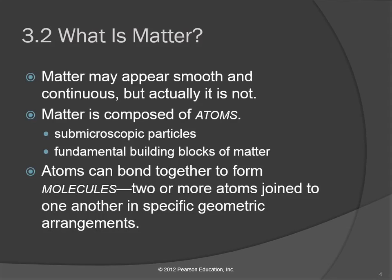Those atoms can join together and make molecules. A molecule is just two or more atoms that are joined together in a specific geometric arrangement. So if you think of people as being like atoms, then a family might be like a molecule — people that have joined together into a family unit.